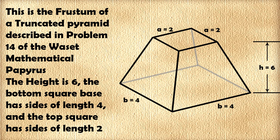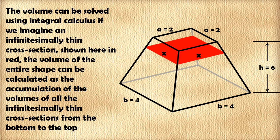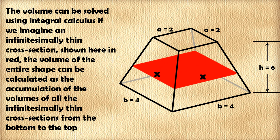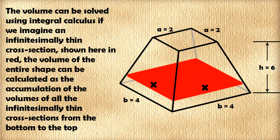So this is the frustum of a truncated square pyramid described in problem 14 of the Waset mathematical papyrus. The height is 6. The bottom square base has size of 4. The top square has size of 2. So the volume can be solved using integral calculus if we imagine an infinitesimally thin cross-section, shown here colored in red.